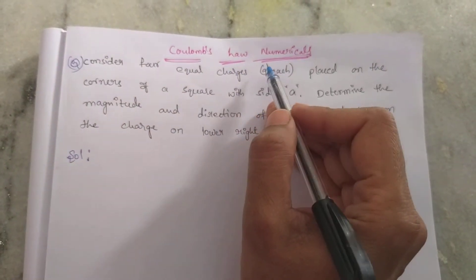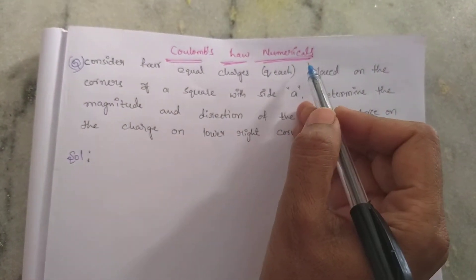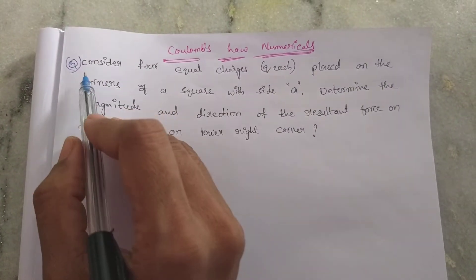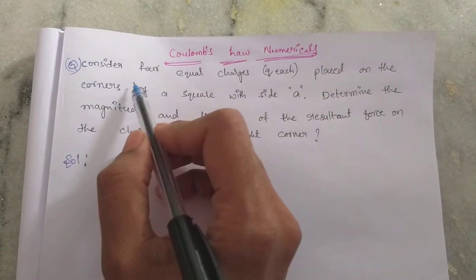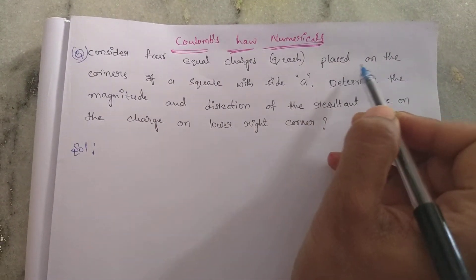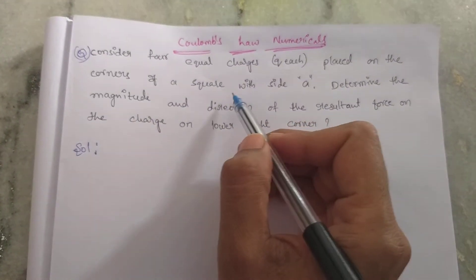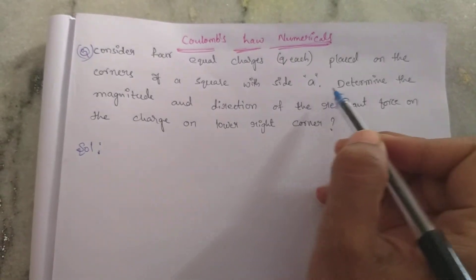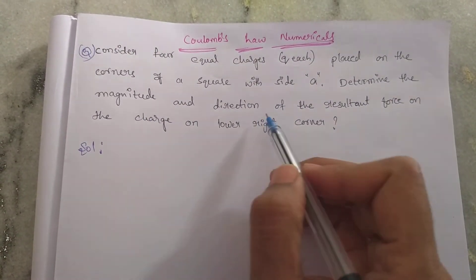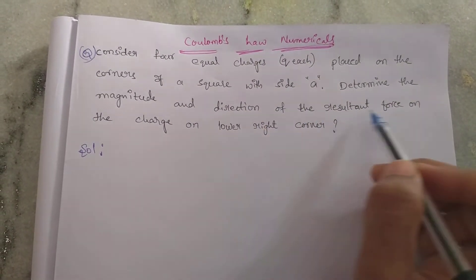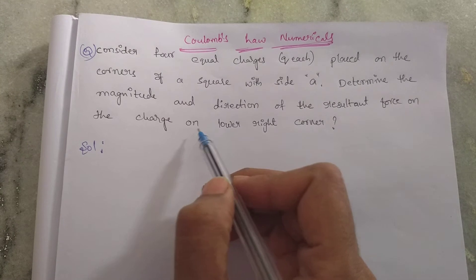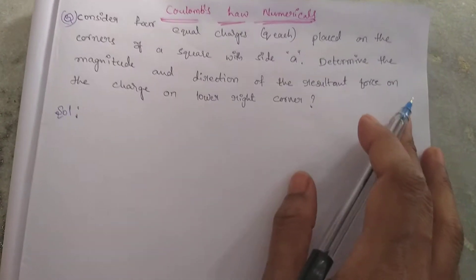Today I am going to explain Coulomb's Law numericals. Consider the first one: 4 equal charges Q are placed on the corners of a square with side A. Determine the magnitude and direction of the resultant force on the charge at the lower right corner.